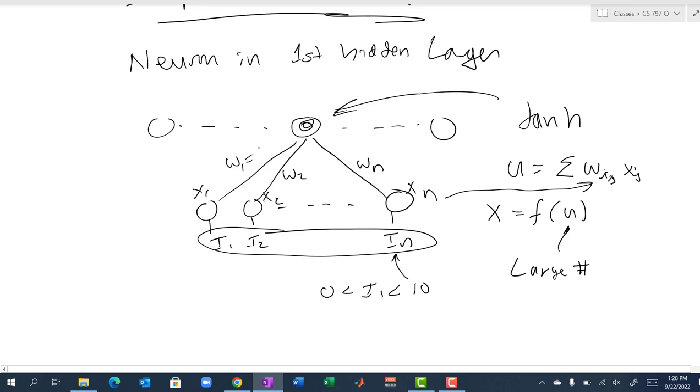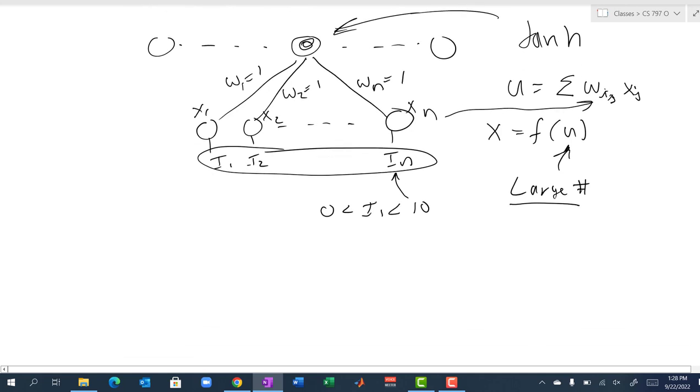Let's say all of the inputs range between 0 and 10, and then you have weights on the order of 1 for example. You could get a really big number as this net input, and then what happens to that? That goes into the activation function, tanh. That big number u is way over here, and you're going to get a 1 as an output.